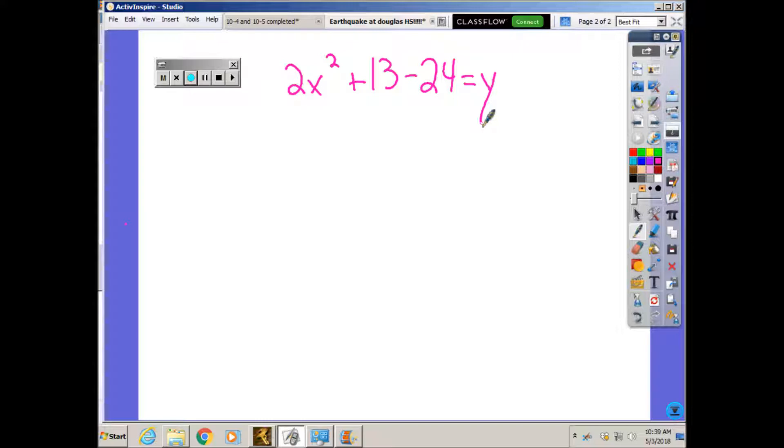It's an AC method problem, which means the first thing I have to do is multiply the a term and the c term. 2 times negative 24 is negative 48.